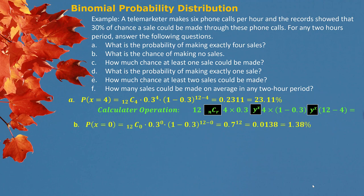Part B: What is the chance of making no sales? Clearly we observe no success, so x = 0. Putting all the information into the formula gives us an answer of 1.38%.